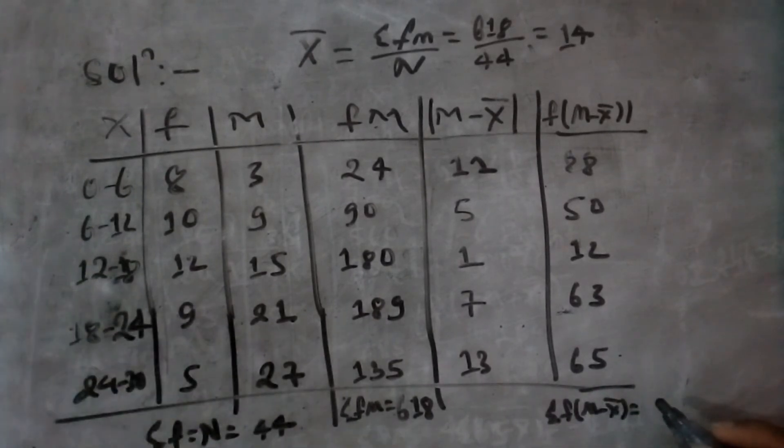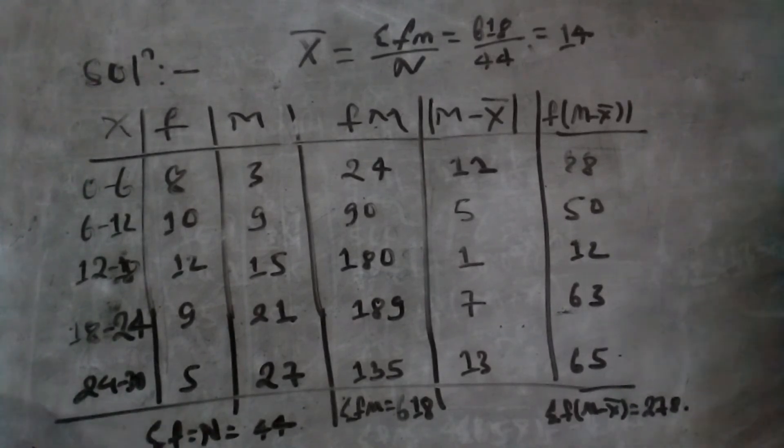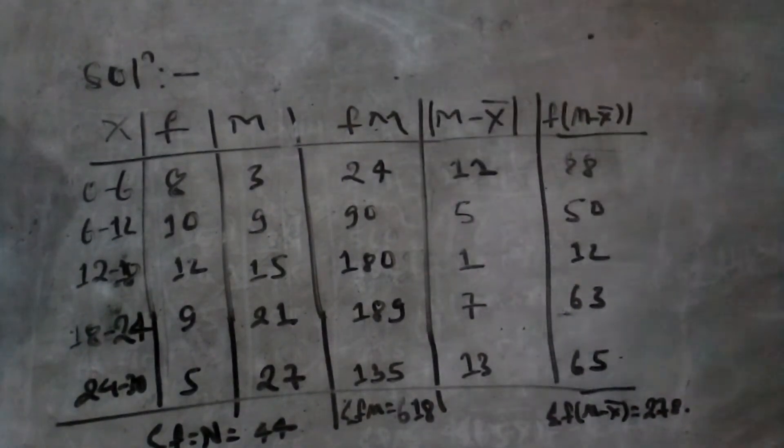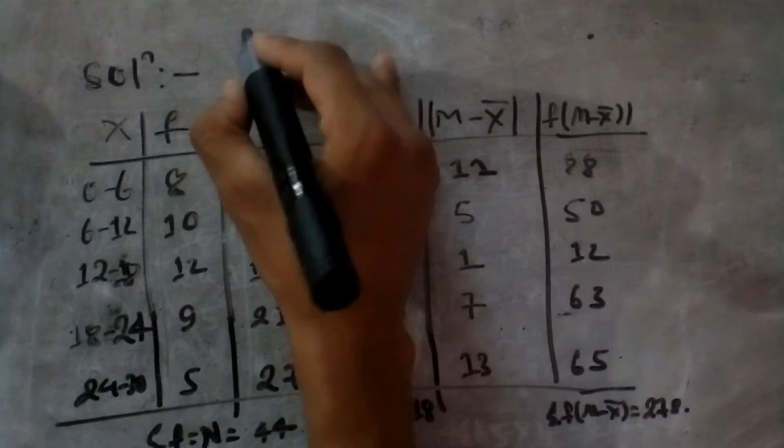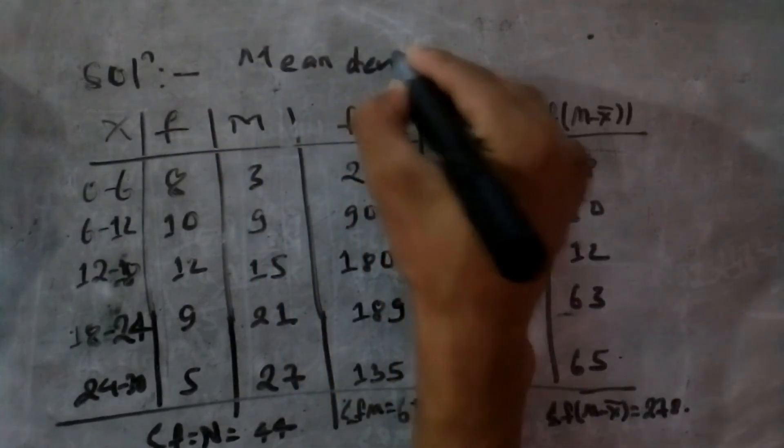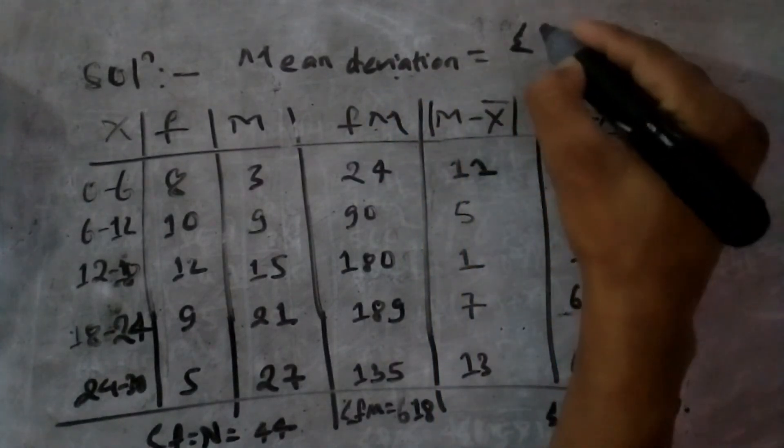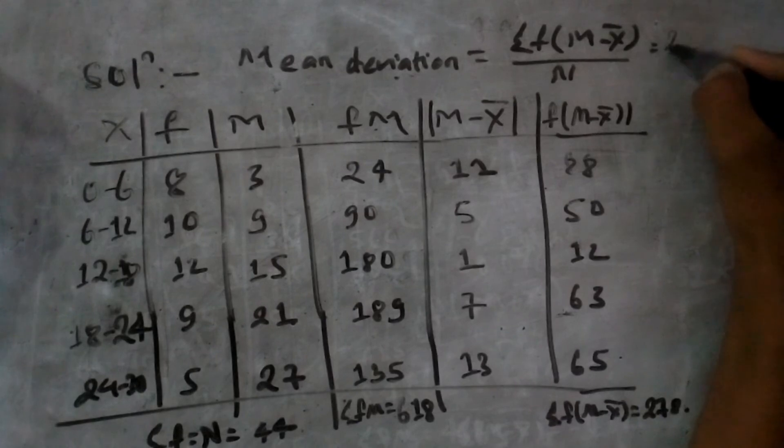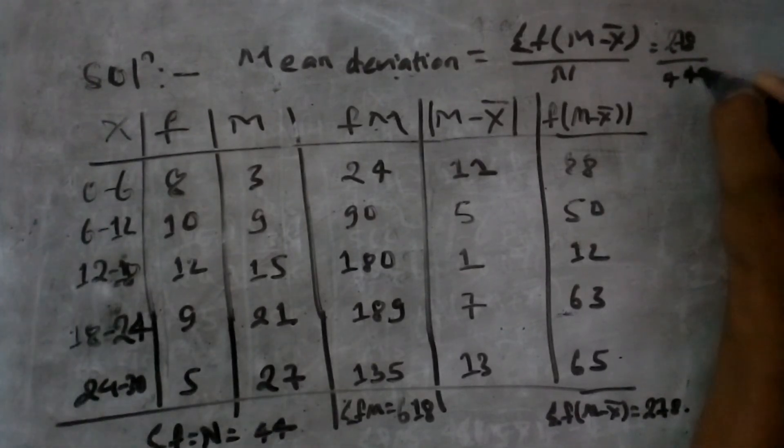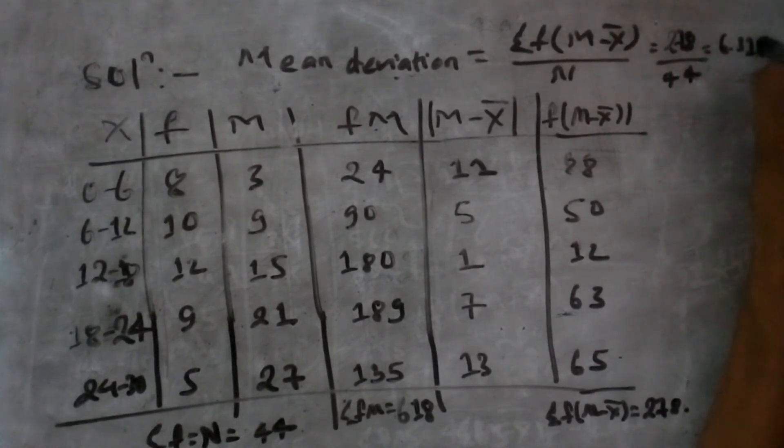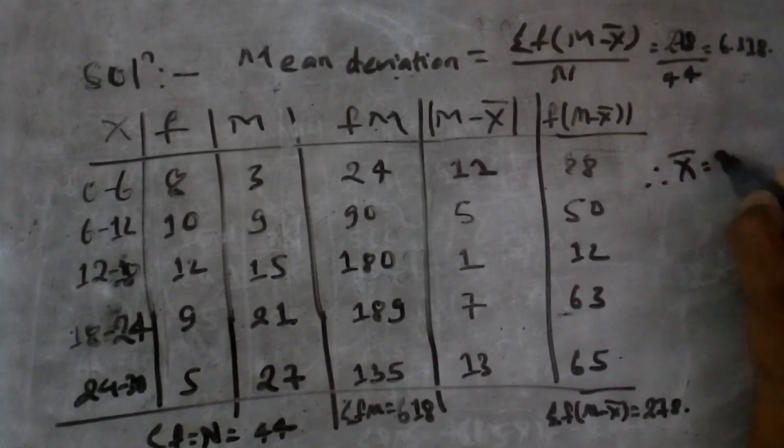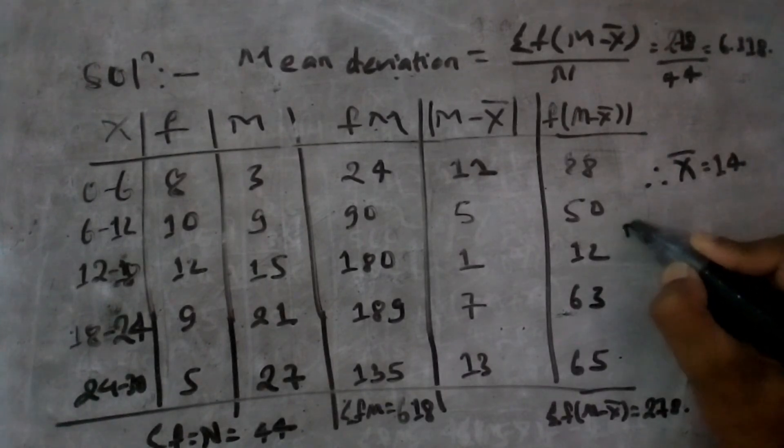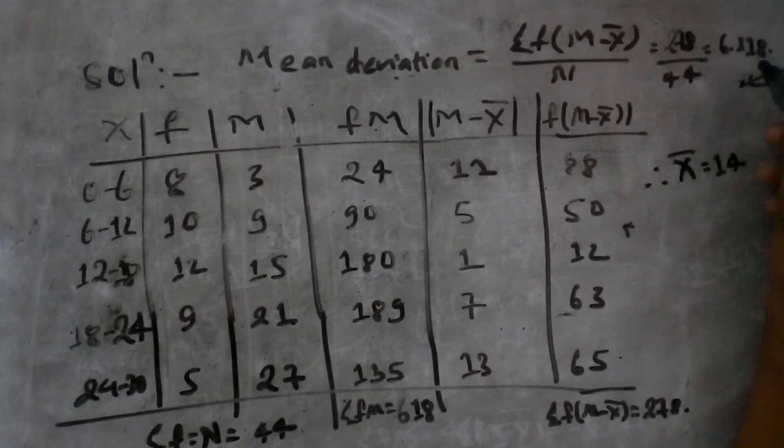Summation of f times m minus x bar equals 278. Now calculating mean deviation using the formula: summation of f m minus x bar by n equals 278 divided by 44, which equals 6.318. Therefore, x bar equals 14 and mean deviation equals 6.318. Thank you.